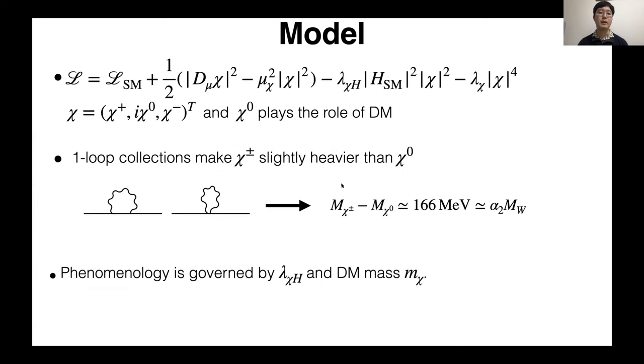The renormalizable and gauge invariant Lagrangian of the scalar triplet model is defined as this. Chi is scalar triplet, and chi plays the role of dark matter. This is the kinetic term of chi, and this is the interaction between chi and Higgs doublet, and the self-interaction of chi.